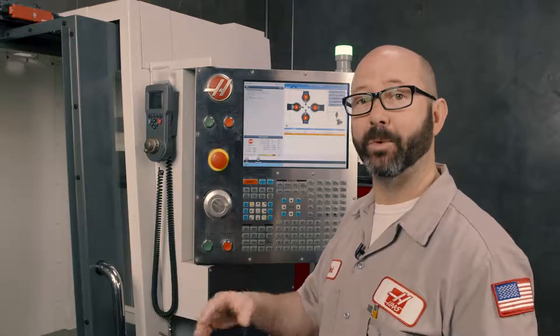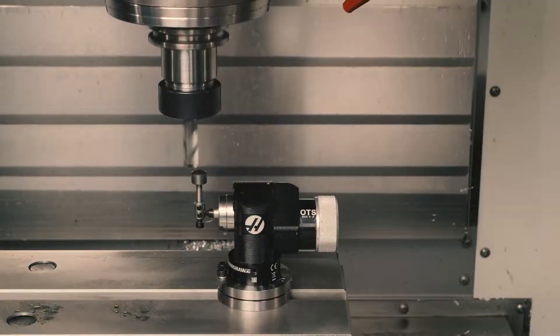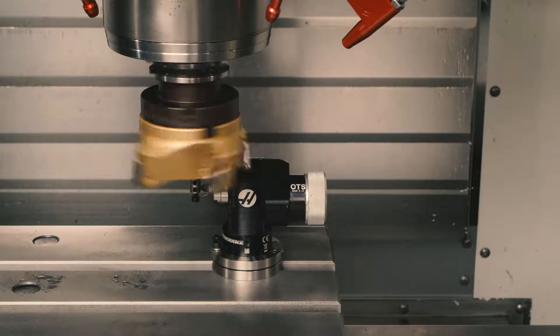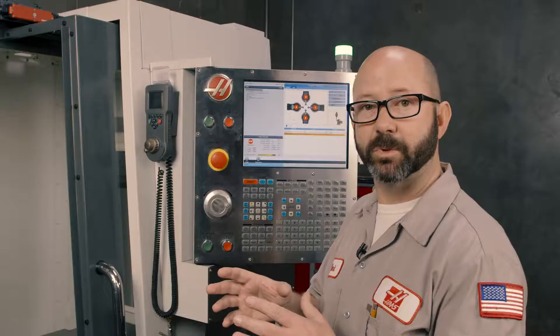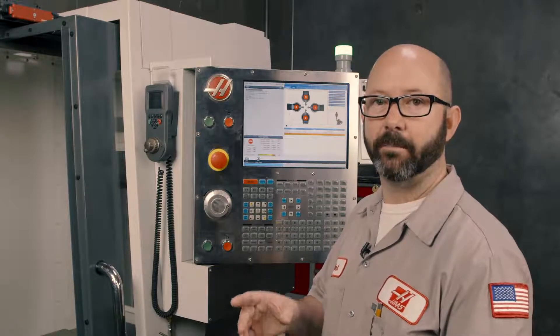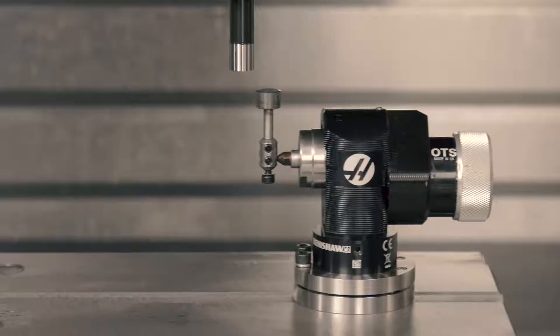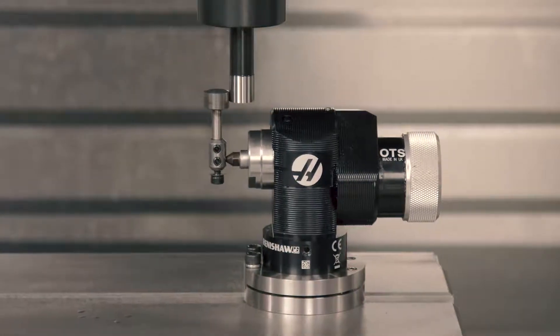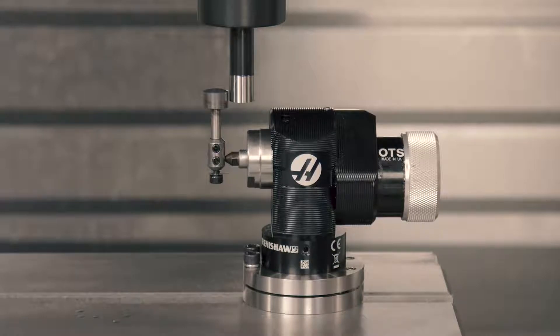When we're actually probing real tools, when we probe a drill, when we probe an end mill, or even a great big giant 100 millimeter shell mill. When it's probing those tools, it never approaches the stylus from the right hand side, so we're safe. But it does approach the stylus from the right hand side during the calibration process, which is why we need that 19 millimeters, or three quarter inch, of travel.